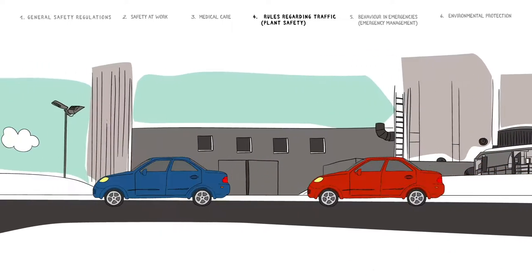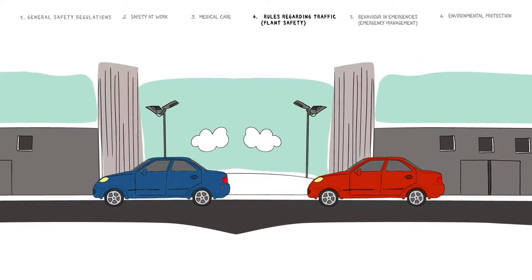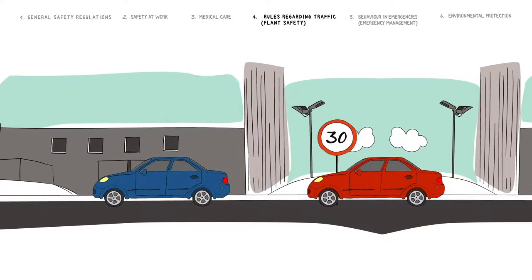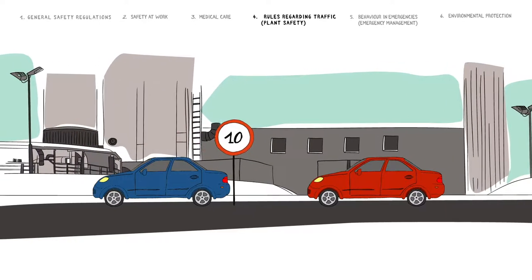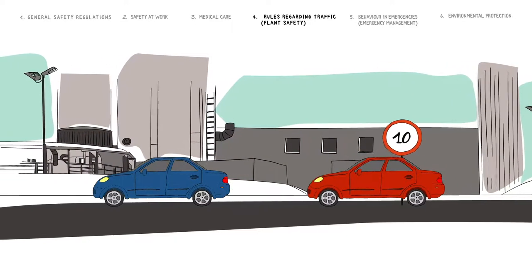The maximum speed limit on the premises is 30 kilometers per hour. However, in some sign-posted areas, the limit is 10 kilometers per hour. The traffic code regulations apply accordingly.